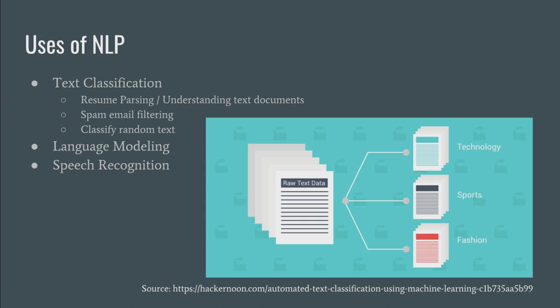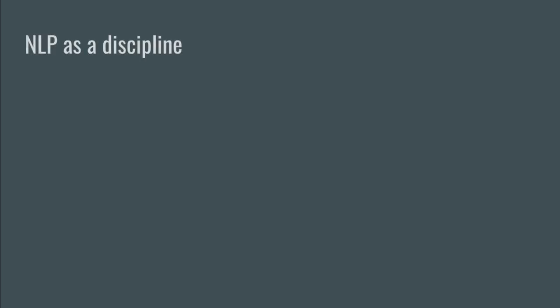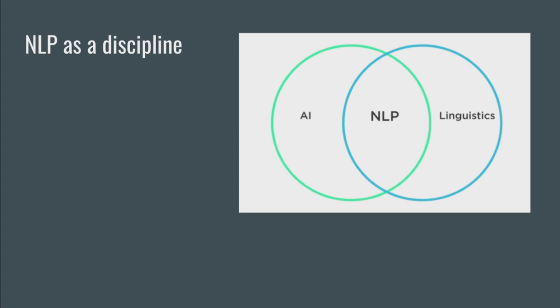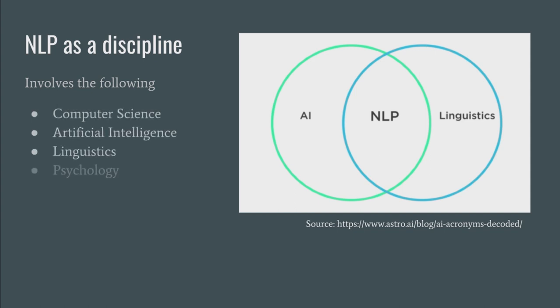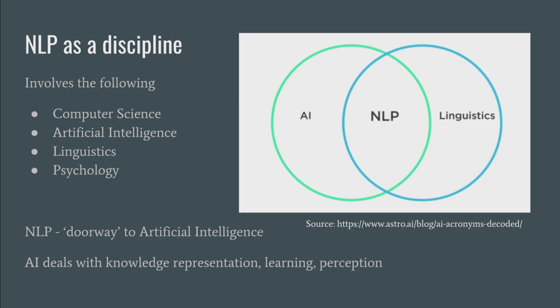Language modeling is quite important in the field of speech recognition, spelling correction, machine translation, etc. — each of these topics will be talked about in detail in future episodes. There is no dearth of applications of NLP anywhere; the field is full of things ready to be explored. NLP is a discipline that involves computer science, artificial intelligence, linguistics, and even psychology to an extent. NLP is generally considered as a doorway into the field of AI as well, because AI deals with things like knowledge representation and learning, which are related to NLP. Some even go forward and propose that NLP is a branch of AI itself.